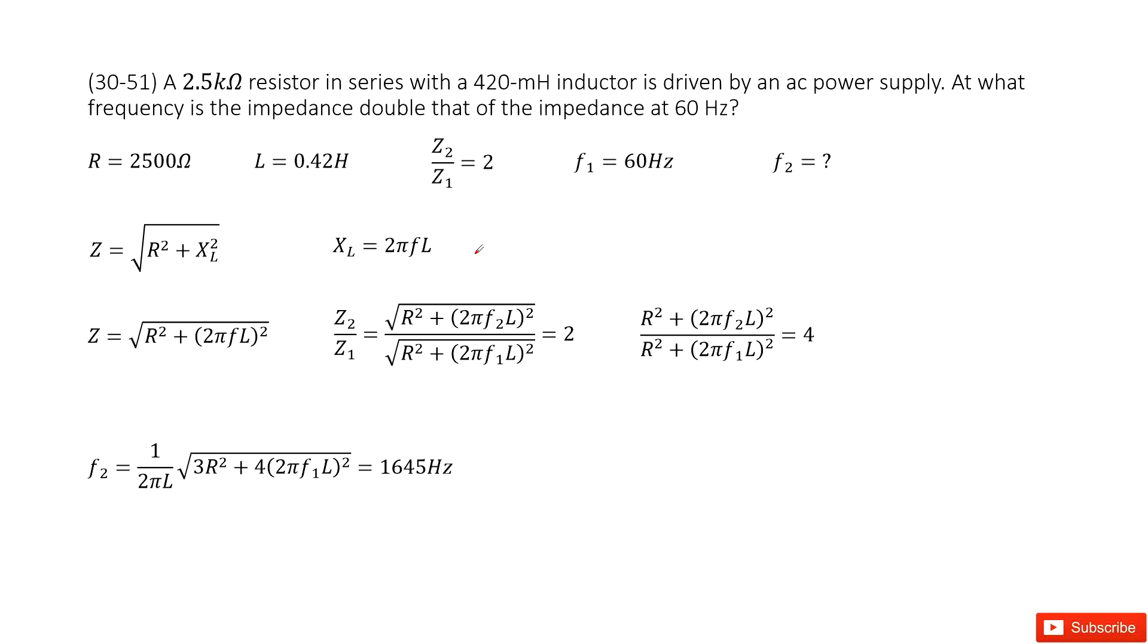We can see we have an RL circuit. The R and L is given. It also tells you the final impedance is twice the initial impedance, so we can write Z2 over Z1 equals 2. And it tells you initially the frequency is 60 Hz.